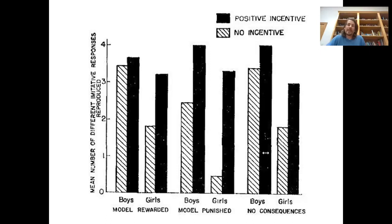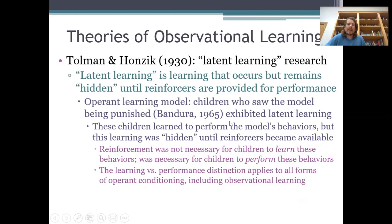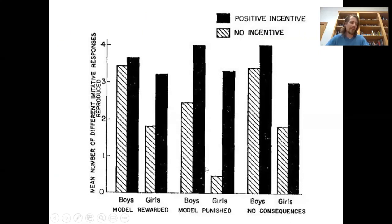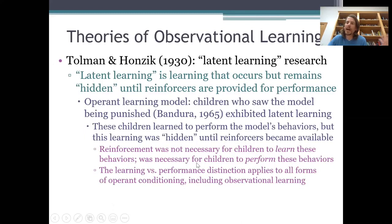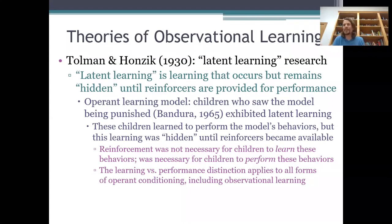Latent learning is an accepted phenomenon in operant conditioning, so proponents of the operant learning model of observational learning would say that Bandura's results are just another example of it. Those kids who saw the model being punished didn't need to get reinforced in order to learn from what they saw, but they did need the prospect of reinforcers — that incentive — to actually perform what they had learned. Operant conditioning theorists have long recognized this distinction between learning and performance, so it's not really as big a problem for the operant learning model as Bandura wanted to claim.